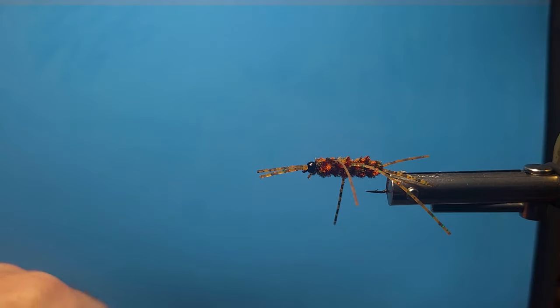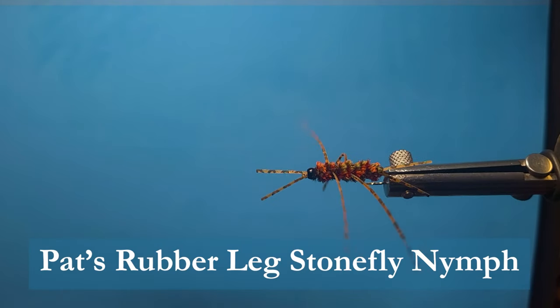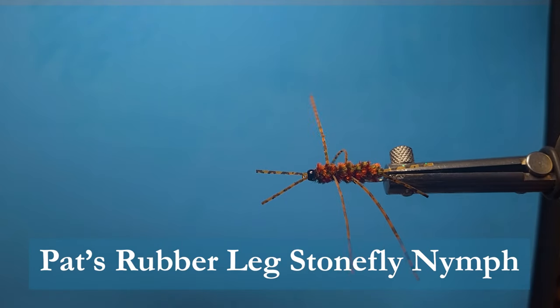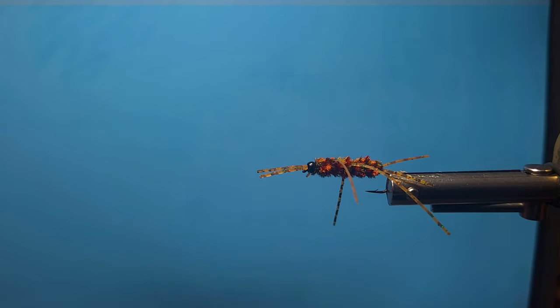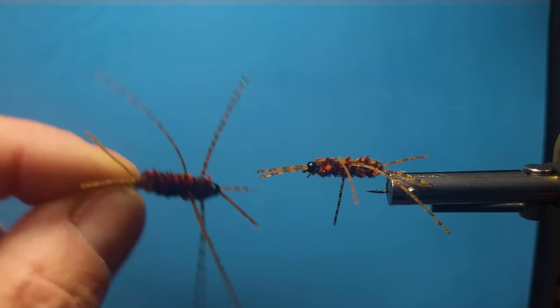Good day everyone and welcome to another segment on the bench. Today I'm going to bring you a very simplistic little fly here, this is Pat's Rubber Legs created by Pat Bennett. It's a very innocent looking little bug, but anyone that's fished these flies can testify that they are one of the better flies in the water.